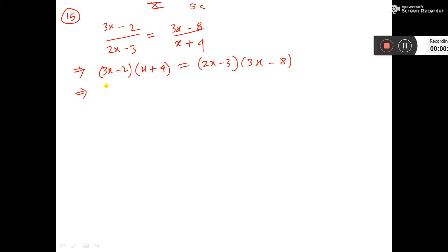Then, this 3x into this, that is 3x squared plus 12x minus 2x minus 8, here 6x minus 16x minus 9x plus 24, so this is x squared.